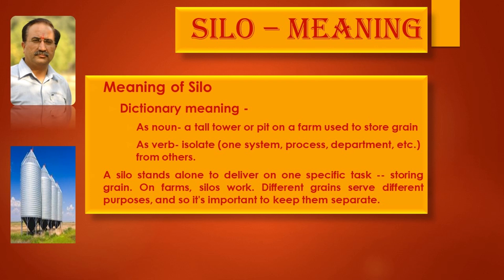These silos store different food grains for different purposes at a later stage. For example, there might be a food grain kept for having the next crop and to be used as seeds, a different variety going to a different market, or a different variety used for customers having diabetes. These different food grain silos are taken as a metaphor to understand silo marketing.